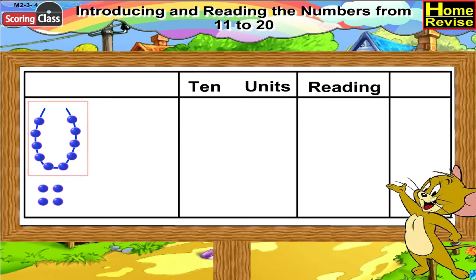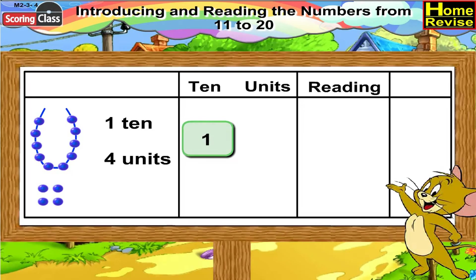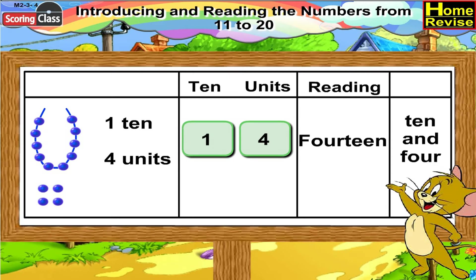The fourth picture has a string of ten beads and four extra beads, which means it is one ten, four units. Under tens you write one, and under units it is four. We will read it as fourteen, or ten and four.